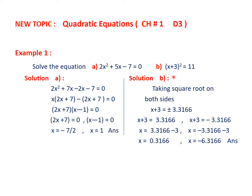In part b of this example, the equation is (x + 3)² = 11. Whenever we have something squared equal to a number, we directly take the square root of both sides. We get x + 3 = ±√11 = ±3.3166. This gives two equations: x + 3 equals the positive value and x + 3 equals the negative value. Simplifying each, we get two root solutions for x.